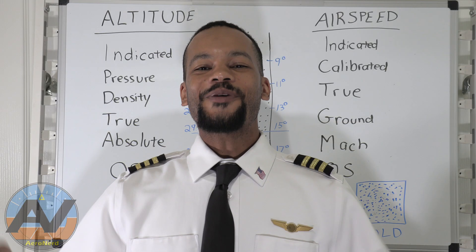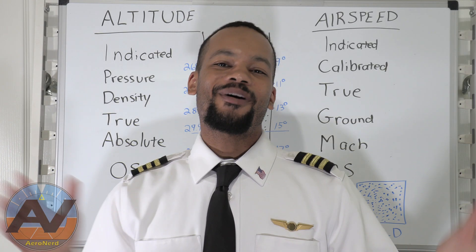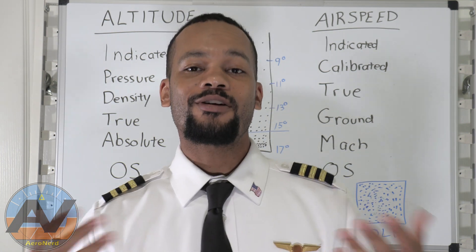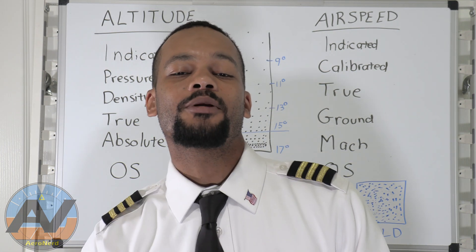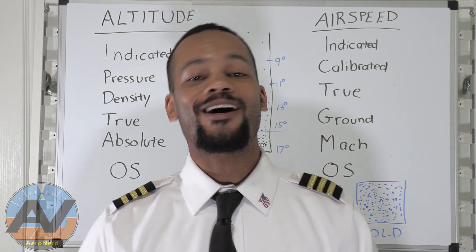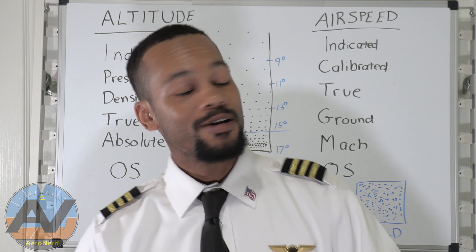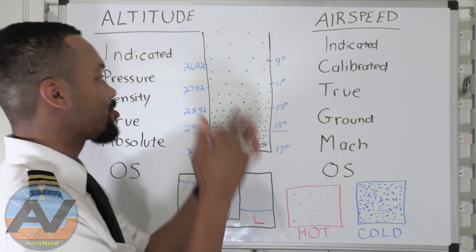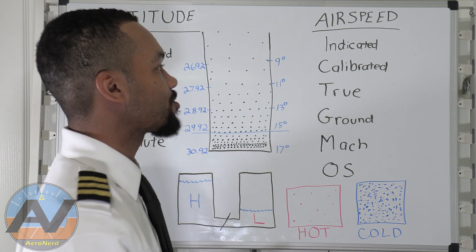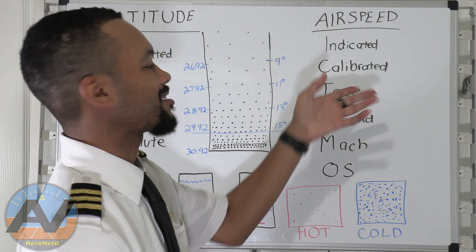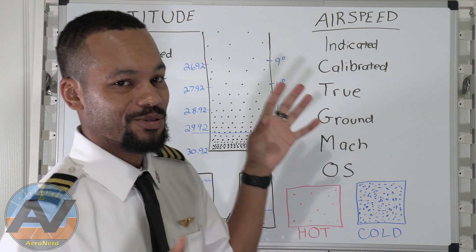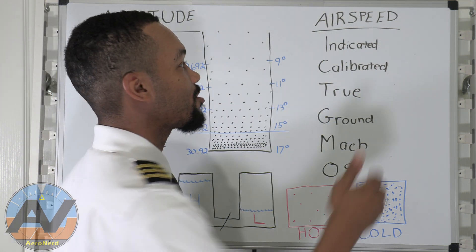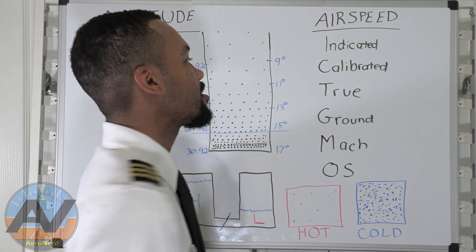Welcome back instrument pilots to session number three. In this ground school training, I'm going to be talking about the airspeed types and the altitude types. I'm going to start with the airspeed types first because these are a little bit simpler to explain, and then go into the altitude types.